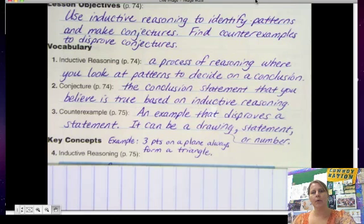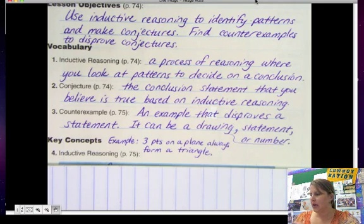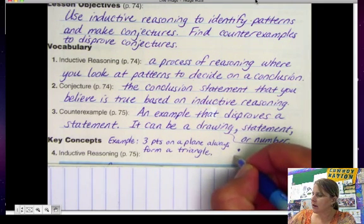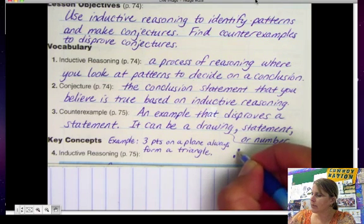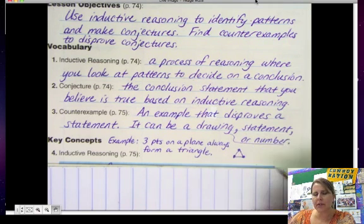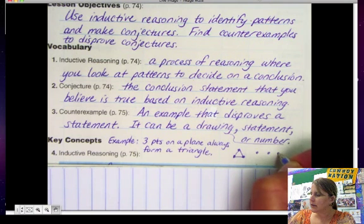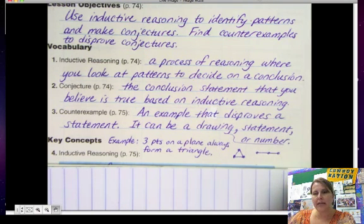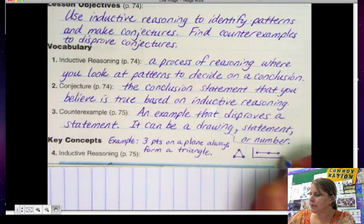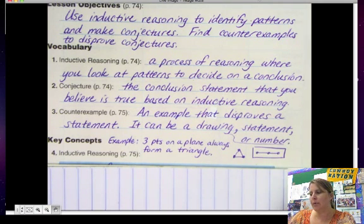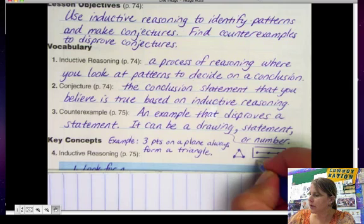Three points on a plane always form a triangle. That seems to be true, but can you think of an example where it's not true? Well, what if the points were all collinear? Aha! Then I don't have a triangle. So my counterexample is this. There are three points that are on this plane, but they are not forming a triangle. They are collinear.